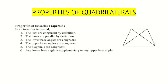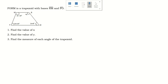So these are the different properties of quadrilaterals. Now let's try to apply these properties in solving problems. Since we've already discussed all the properties of quadrilaterals, this time we'll apply them in solving word problems. In our first question, FORRM is a trapezoid with bases RM and FO. We're going to solve for the value of x.